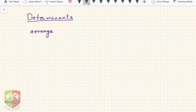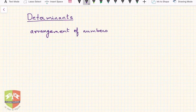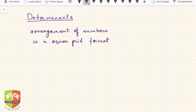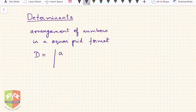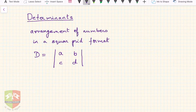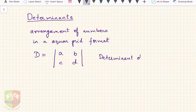Basically, a determinant is an arrangement of numbers in a square grid format. So we say let D be equal to — you put two vertical bars and write a, b, c, and d, then close it with another vertical bar. This is called a determinant of second order.